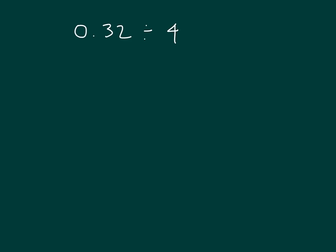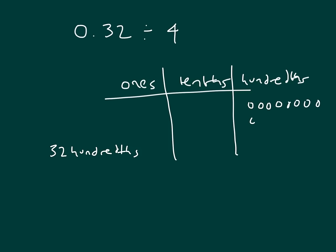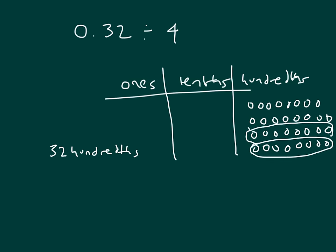32 hundredths divided by 4. Here's a place value chart to help us with our work. It would help us to think of this in unit form as 32 hundredths. So 32 hundredths divided by 4 — there is 32 divided by 4 — within each of those groups I have 8 hundredths. So 32 hundredths divided by 4 equals 8 hundredths.